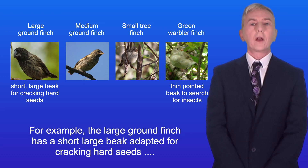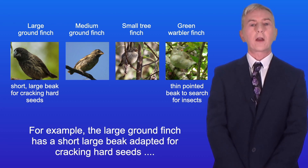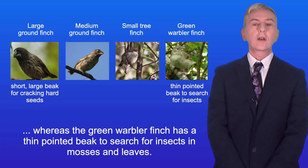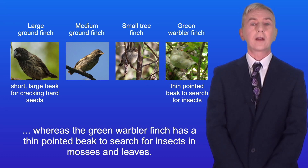For example, the large ground finch has a short large beak adapted for cracking hard seeds, whereas the green warbler finch has a thin pointed beak to search for insects and mosses in leaves.